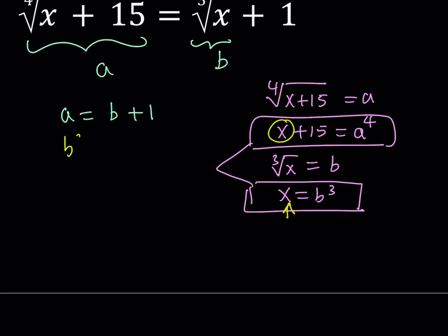Replace x with B cubed. So, we get B cubed plus 15 is A to the 4th power. Now, we got a system of equations here instead of an equation. But, this is not radical anymore. Right? So, how do we solve this? We can just go ahead and use our superpowers again, which is substitution. Let's go ahead and use substitution.